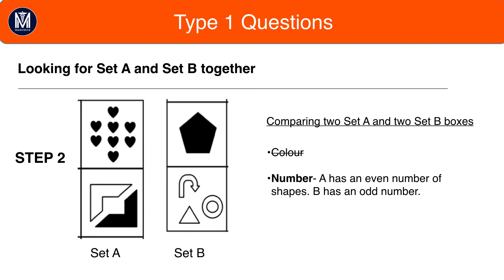Comparing an extra box in Set A and an extra box in Set B. Unfortunately, the color pattern is ruled out, but the number pattern still remains as A has an even number of shapes and B has an odd number of shapes.